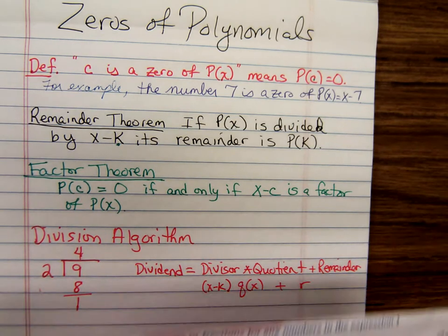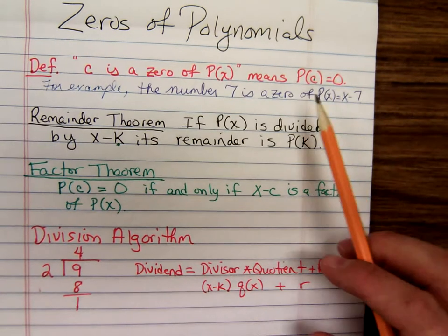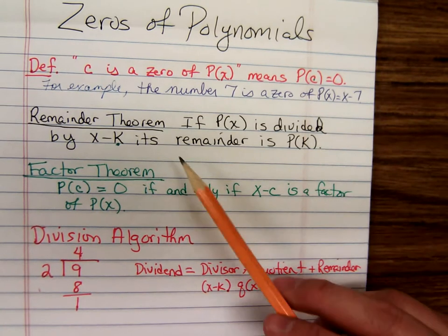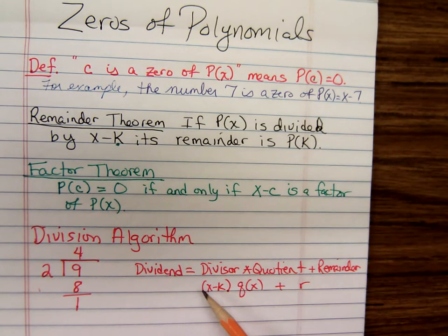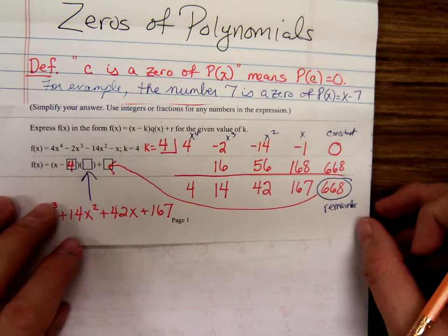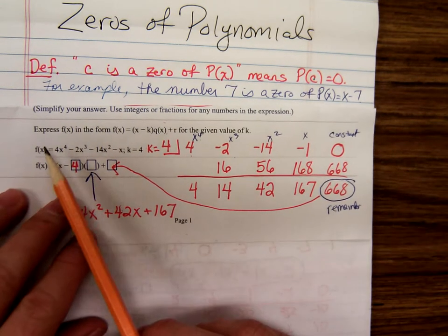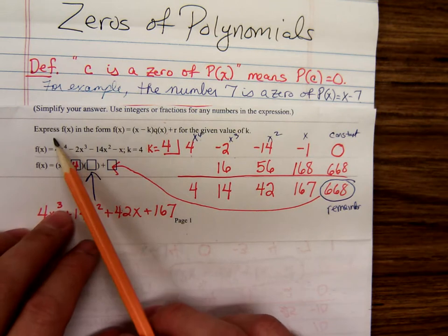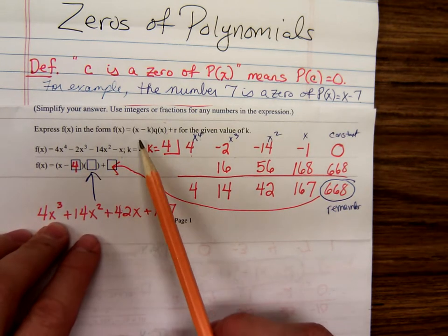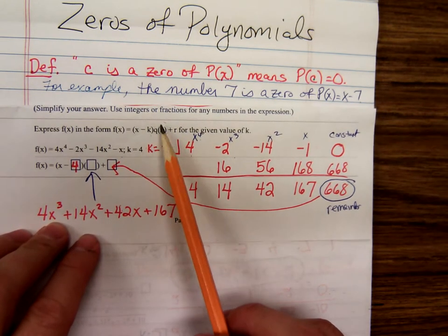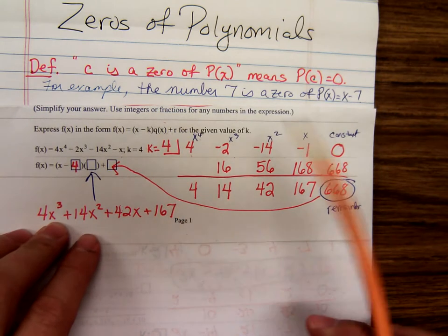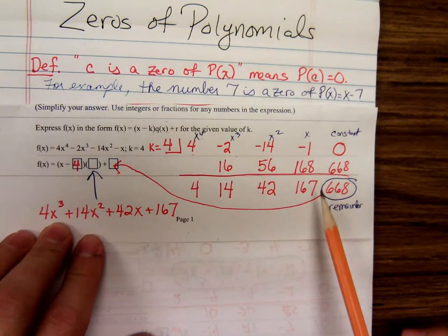We've already defined zeros, worked with the remainder and factor theorem and stated the division algorithm. Then using the synthetic division, we went through, write this polynomial in the form divisor times quotient plus remainder. We've done that example.